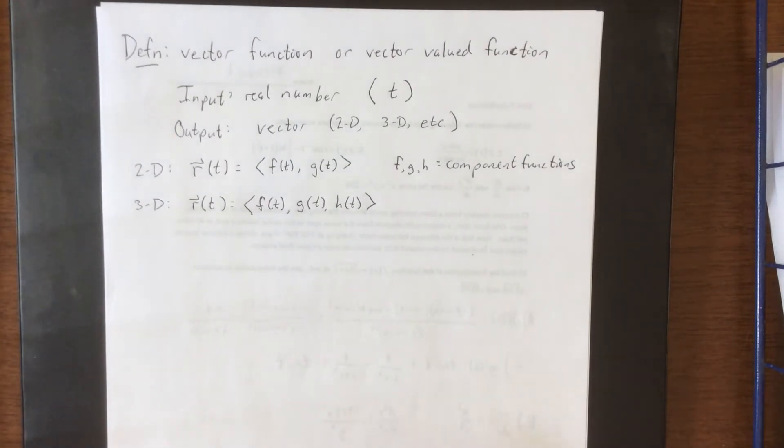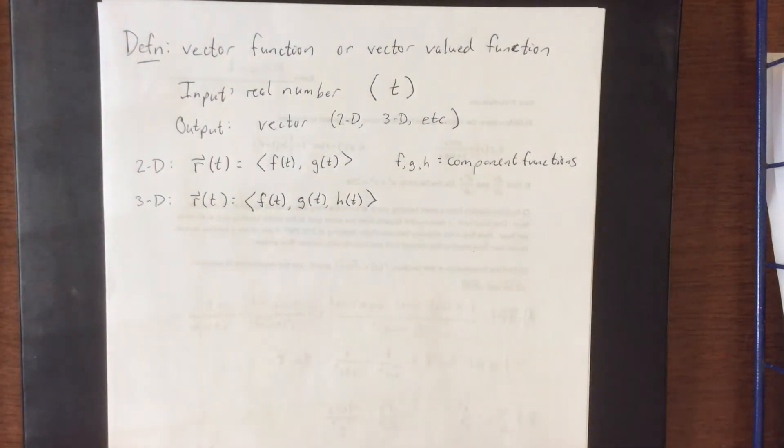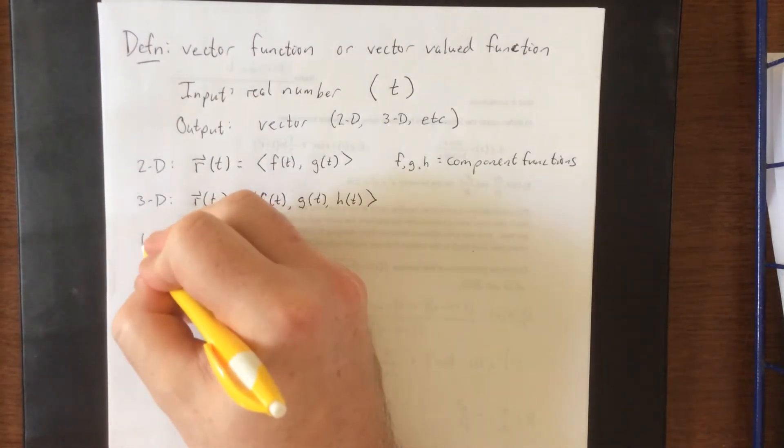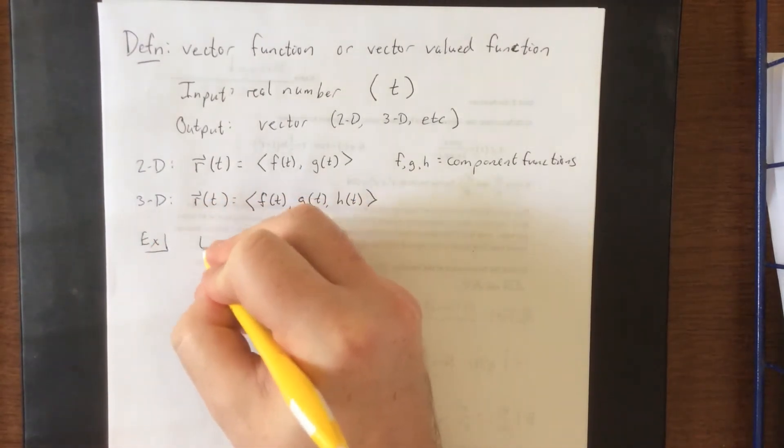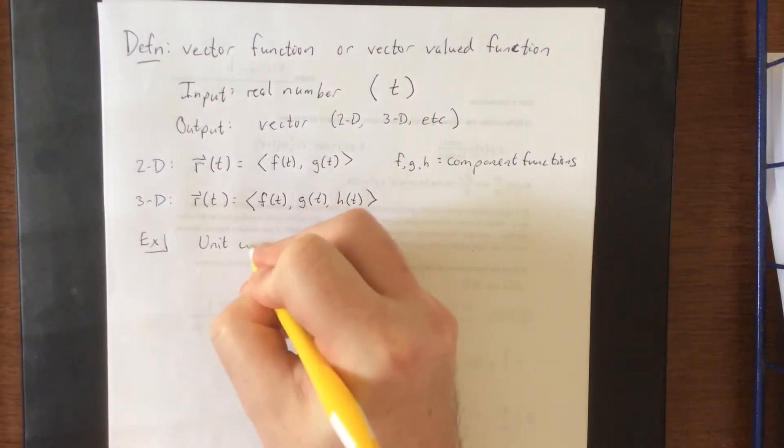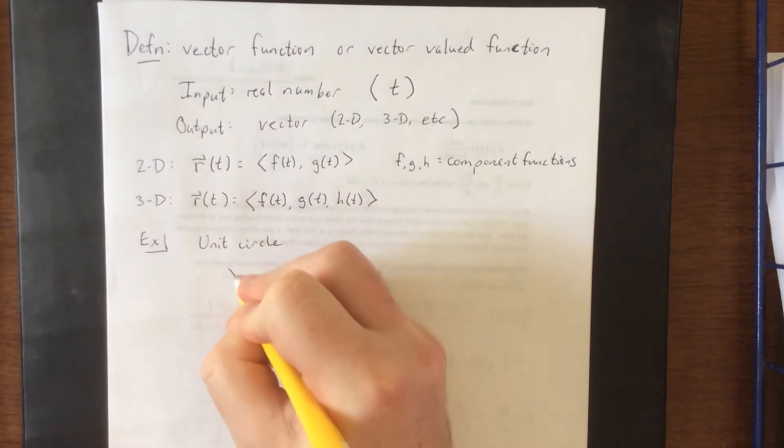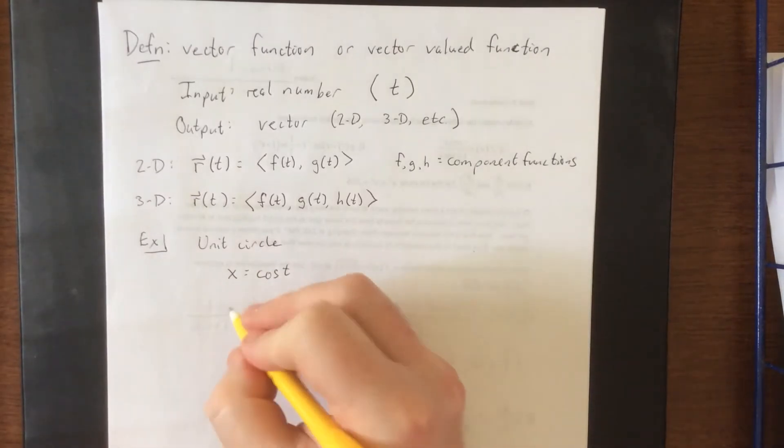Now typically the way that you can create a vector function is by starting with parametric functions, or parametrically defined things, and then just throw it all into a vector. So an example of one such thing would be the unit circle. Unit circle is something that gets defined parametrically, with x being the cosine of t and y being the sine of t.